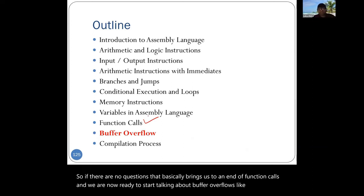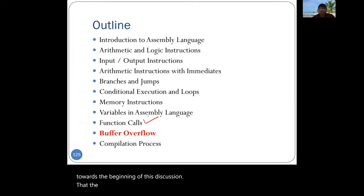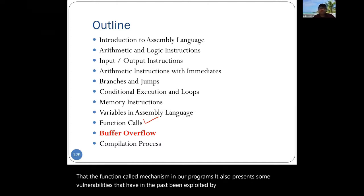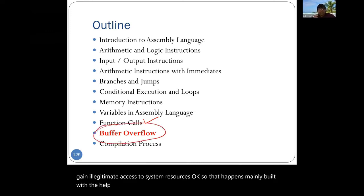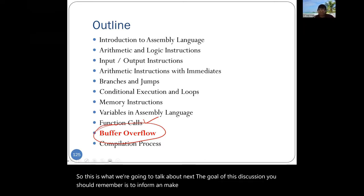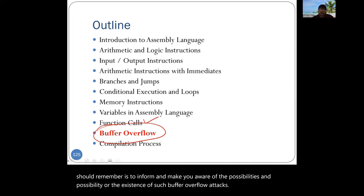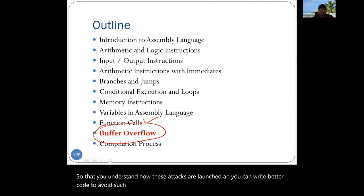As mentioned earlier, the function call mechanism in our programs presents some vulnerabilities that have been exploited by hackers to gain illegitimate access to system resources. This happens mainly with the help of buffer overflow attacks. The goal of this discussion is to inform and make you aware of such buffer overflow attacks so that you understand how these attacks are launched and can write better code to avoid such vulnerabilities in your programs.